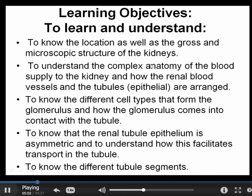We're going to look at the two main sets of structures, the blood vessels and the tubules in the kidney, and see how they're arranged relative to one another. We're also going to talk about the renal tubule epithelium which is responsible for reabsorption of filtered material that is required within the body. And we'll talk about the asymmetric structure of this tubule which facilitates reabsorption.